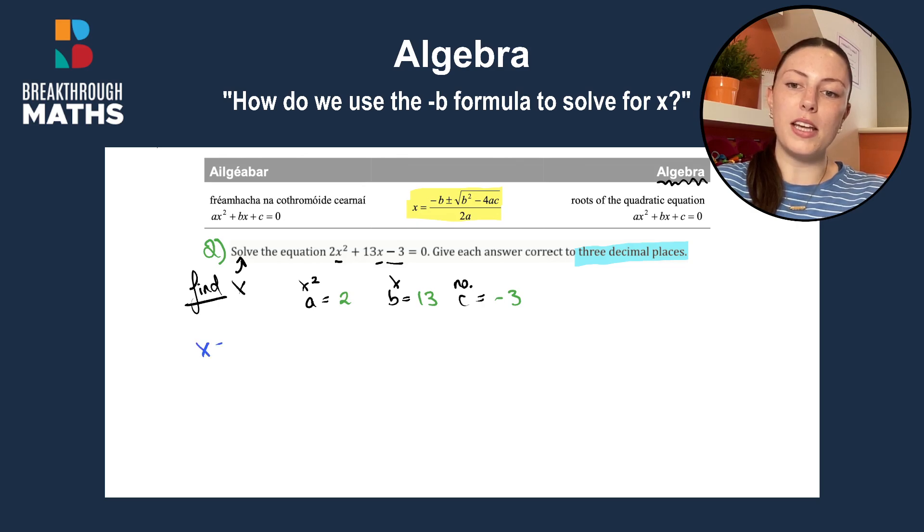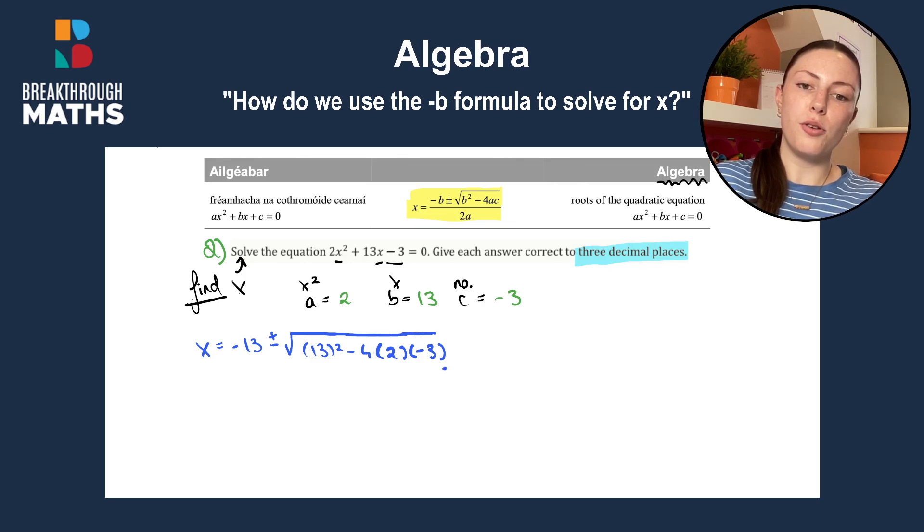So x is going to be equal to minus b, our b is 13, so minus b is minus 13, plus or minus, so I'm just following along with the formula I have highlighted in yellow, the square root of b squared, so 13 squared minus 4 by a by c. And our a by c is 2 by minus 3. And that's all over 2 by a. So 2 by a is 2 by 2.